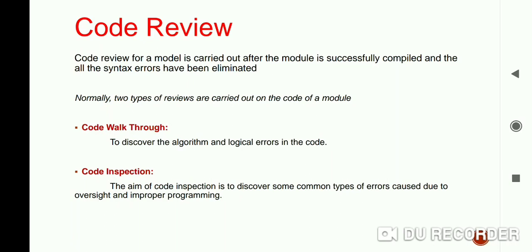The first guideline is the team performing the code walkthrough should not be either too big or too small — ideally it should consist of between three to seven members. The second guideline is the discussion should focus on discovery of the errors. They should avoid thinking about how to fix the discovered errors; they just have to focus on finding what kind of errors are present in the code.